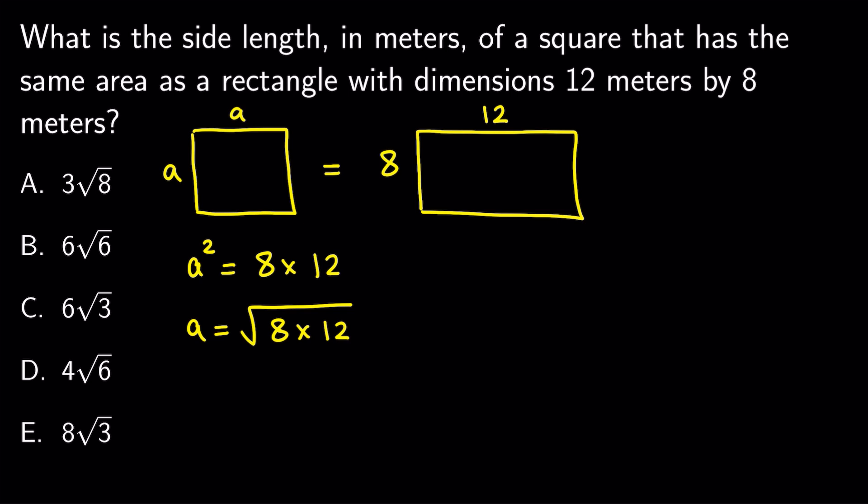We can now simplify the square root by creating perfect squares. So we write square root of 8 times... We can break down 12 into 2 times 6. 2 times 8 gives us 16. That's a perfect square. So we can write it as square root of 16 times square root of 6.